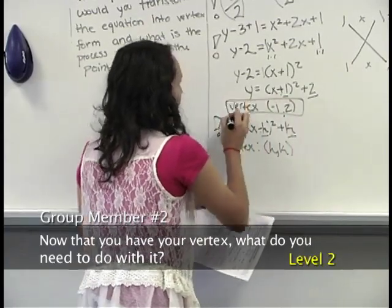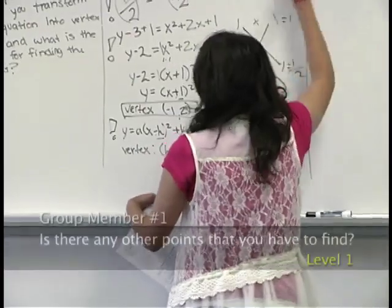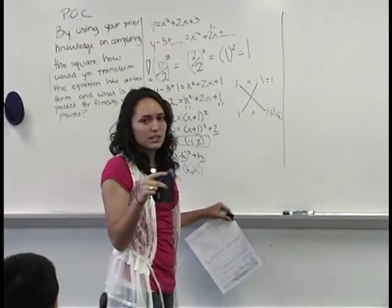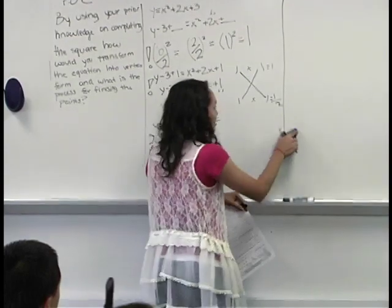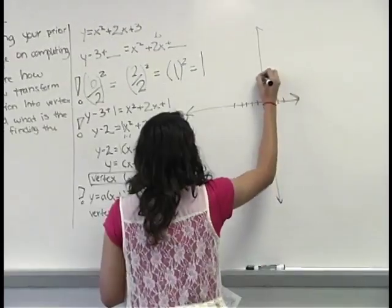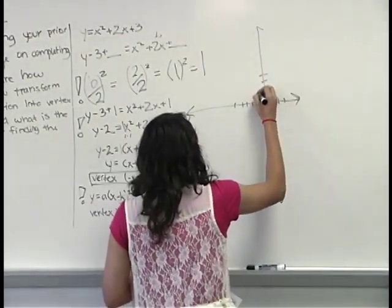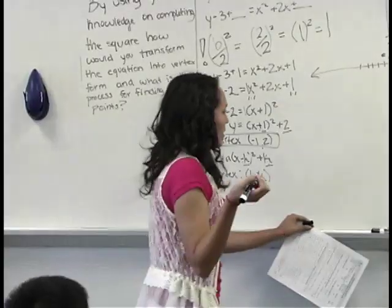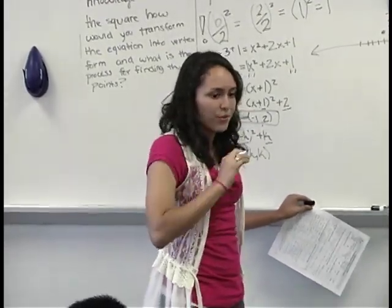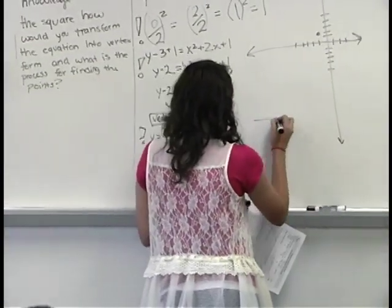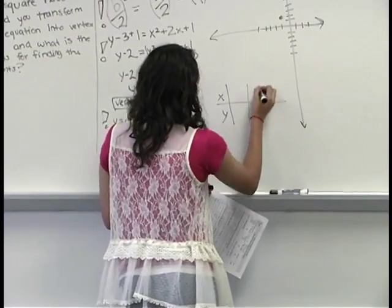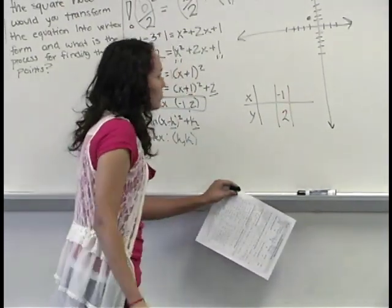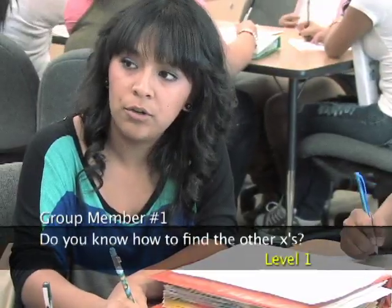Now that you have your vertex what do you need to do with it? Is there like any other points that you have to find? I know that first I have to plot it because it's the vertex and that's how you start the graph. I would just get to know how to find the graph. So from here how would you find like other points on the graph? I know you only need 2 more and I thought you'd use a table but I don't know how to fill in the table. Do you know how to find the other x's?